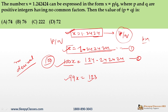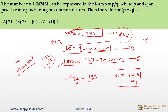Our goal is to convert X = 1.2424... into p/q form. Since there are two repeating digits, multiply X by 100 to shift the decimal: 100X = 124.2424... Subtracting X from 100X: 99X = 123, so X = 123/99. Therefore p = 123 and q = 99. The question asks for p + q = 123 + 99 = 222. The answer is option C.